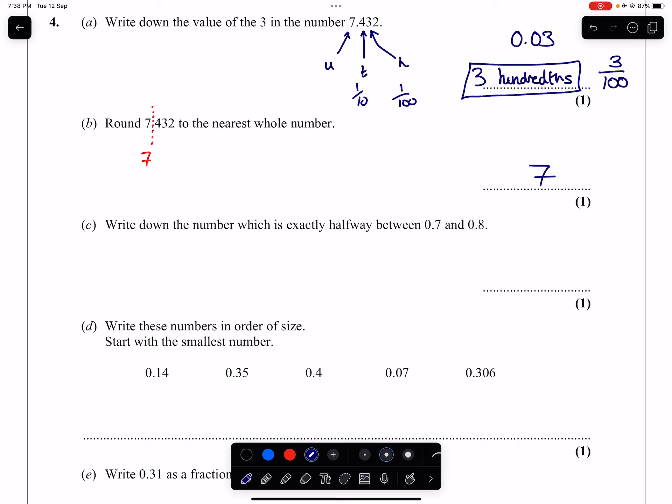Part C. Write down the number which is exactly halfway between 0.7 and 0.8. Some of you will just know that that answer straight away is 0.75, and that's obviously good if you can identify that. But for those that aren't so sure, if you want to find halfway between two numbers, you are basically finding the average, the mean of those two numbers. And if we add those two numbers together and divide by 2, that will give us 0.75.